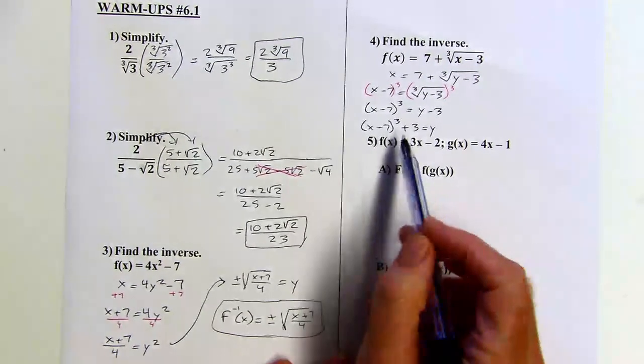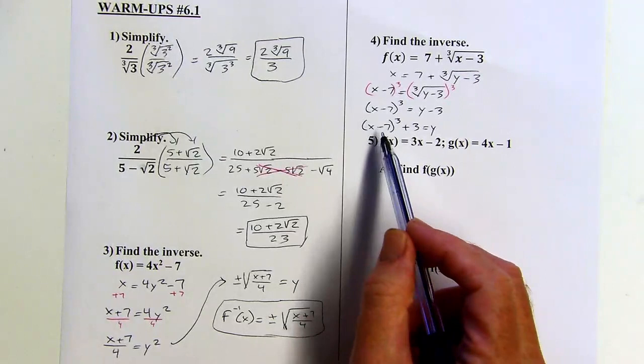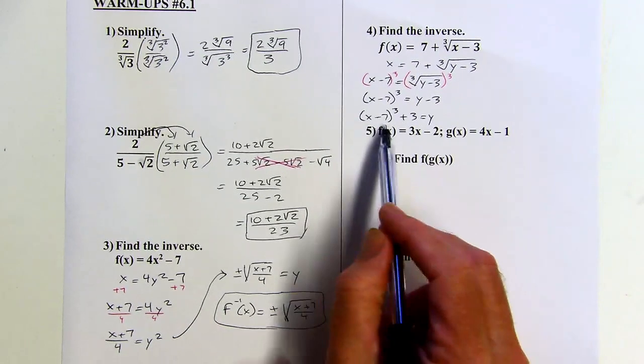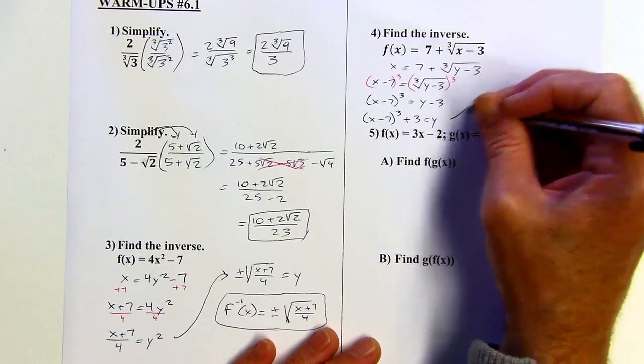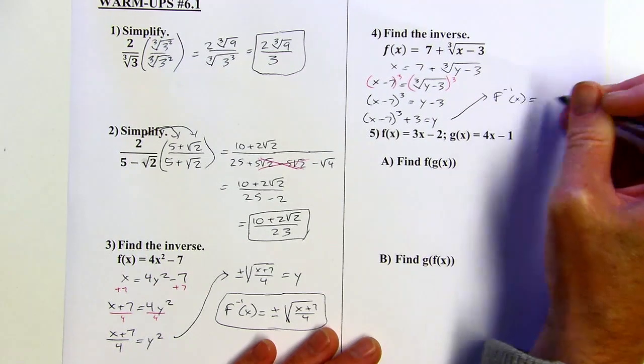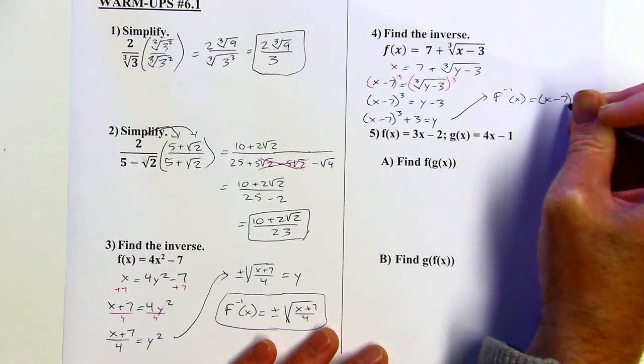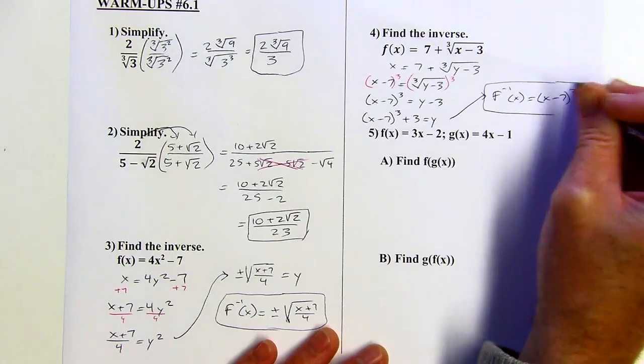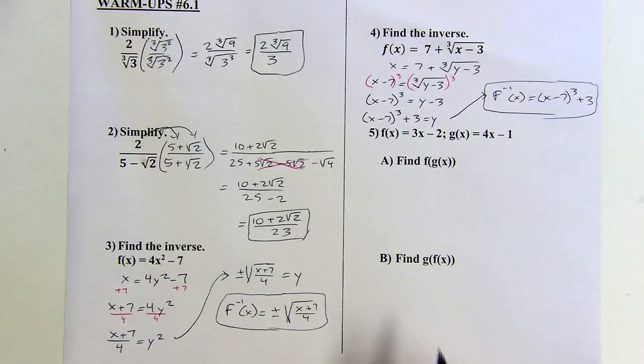And it's true, you could multiply this out x minus 7 times x minus 7 times x minus 7. I'm not going to go through with multiplying that out, because I don't have much space here, but you could do that. I'm just going to say, I'm going to leave my answer like this. And that is the inverse.